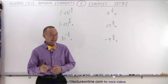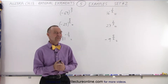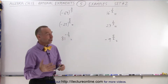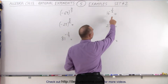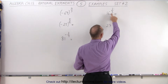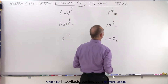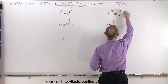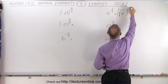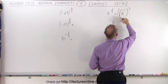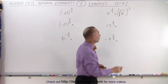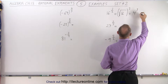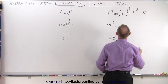Here's our next set — let's see how to handle these types of examples. We have 16 to the 3 halves. The number in the denominator is the root and the number in the numerator is the power. So this means the square root of 16 raised to the third power. The square root of 16 is equal to 4, and 4 to the third power is equal to 64.